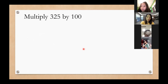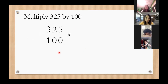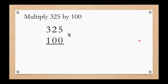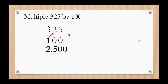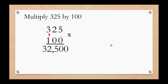Let's move on to our main topic: multiplying three-digit numbers. For example, multiply 325 by 100. How do we solve these numbers? We will bring down the two zeros. Next, we will multiply by 1 from right going to left. One times 5 equals 5. One times 2 equals 2. One times 3 equals 3. So the product for the first example is 32,500.